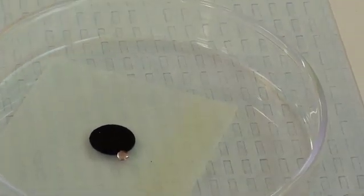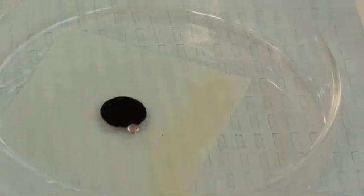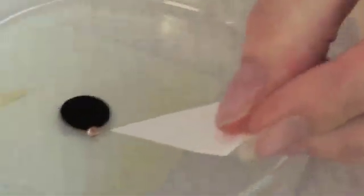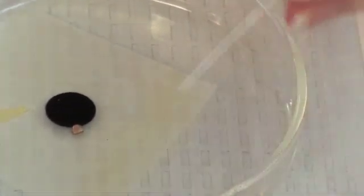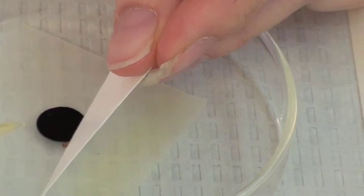When the sample, or the water in this case, has been on the grid for the specified amount of time, it is then wicked off the grid. Here you'll see the instructor using a piece of filter paper to wick the water off the grid. The water is sucked onto the filter paper. Here you can watch it being sucked on.